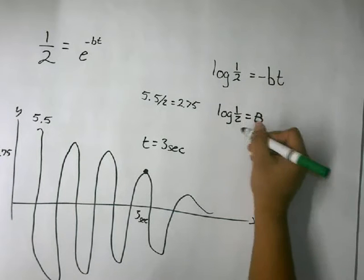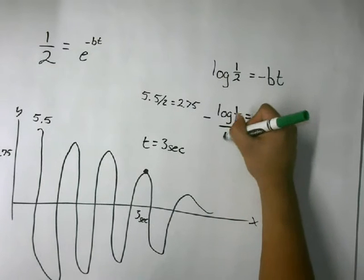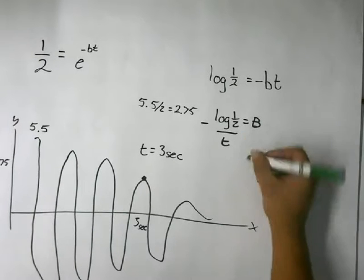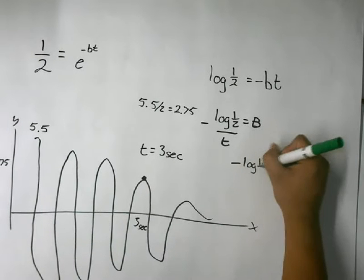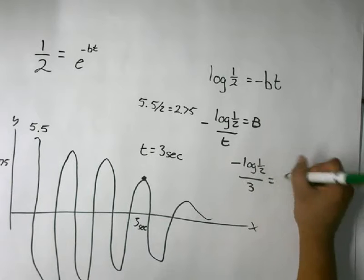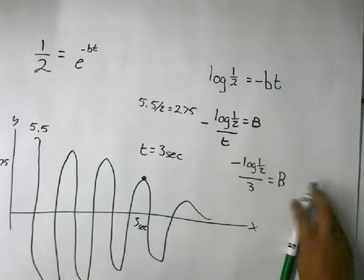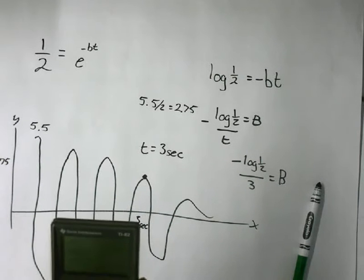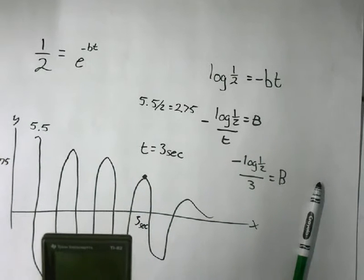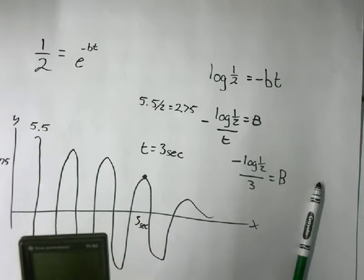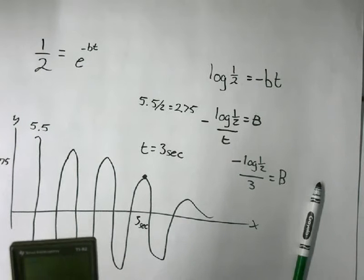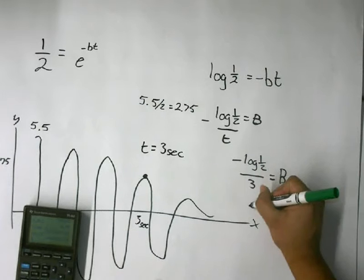And from there, you can plug in for t as 3 seconds. So you're going to have negative log 1 half divided by 3 equals your decay constant b. So let's plug that into the calculator real quick. So negative log 1 half equals this, now divide that by 3, and you're going to get 0.1 is equal to b. And that is your decay constant.